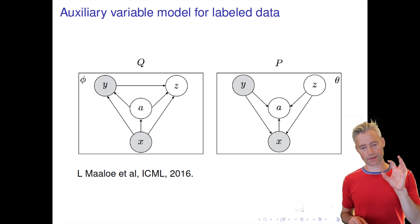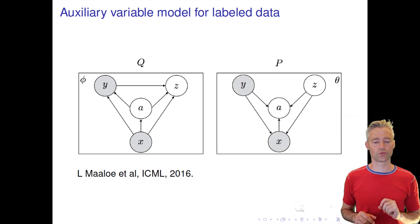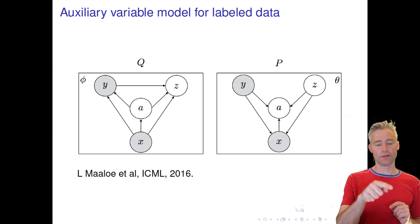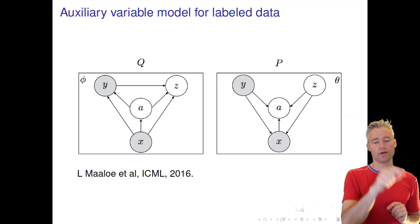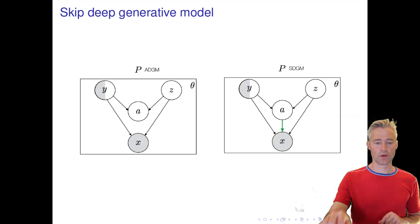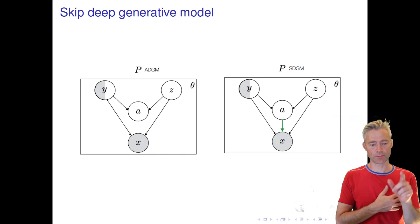We can then also make our encoder model similar to this. So we say now that X contributes to generating both the latent variable and the label. And in order to generate the latent variable, we need both the X and Y. So this is our generative model. Forget about A again.